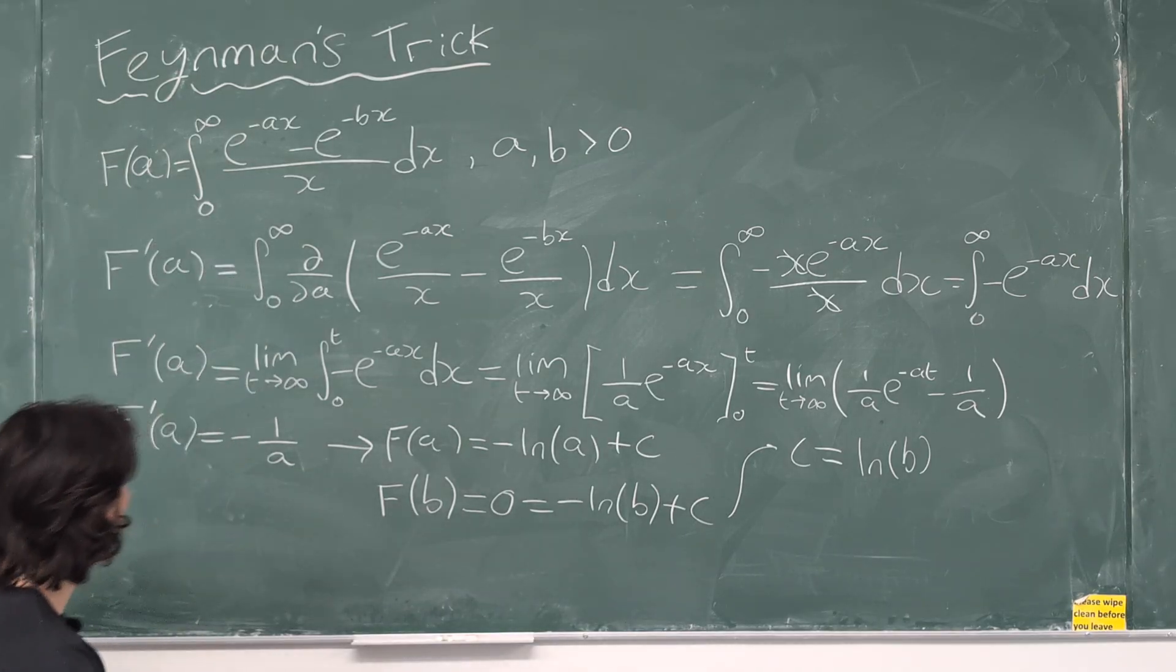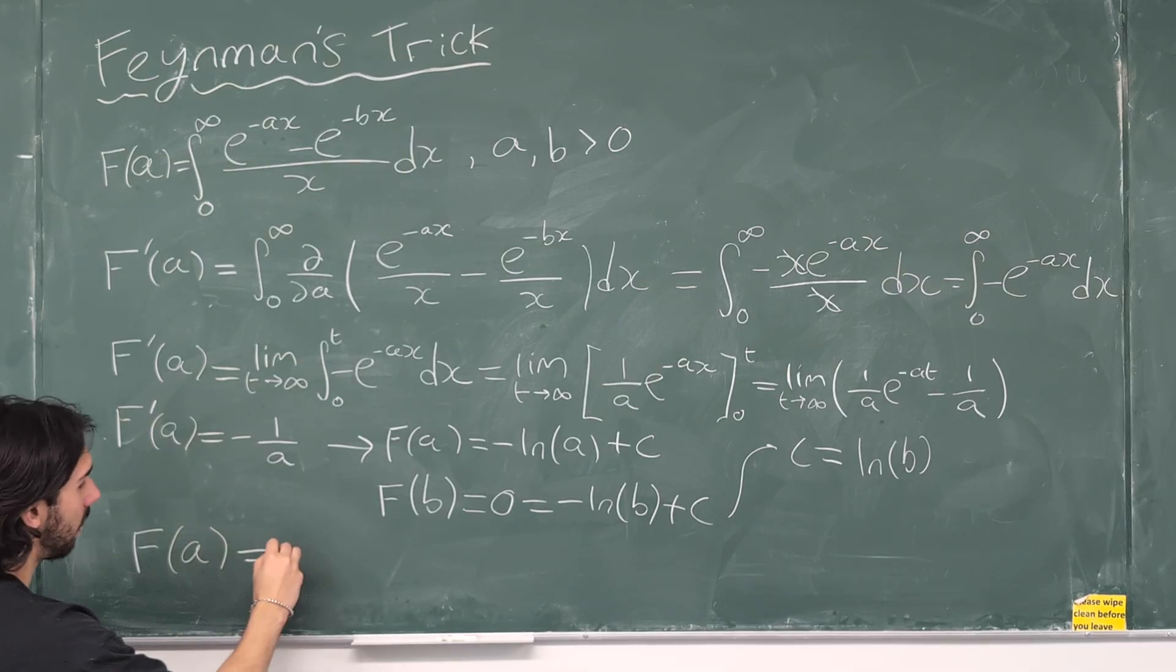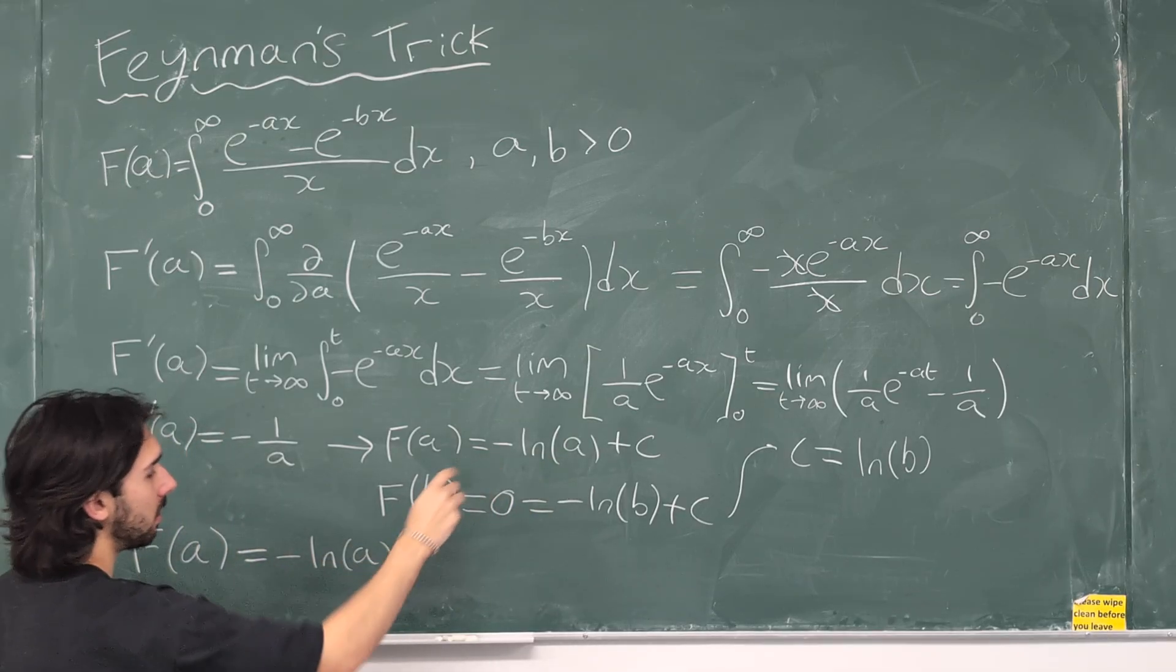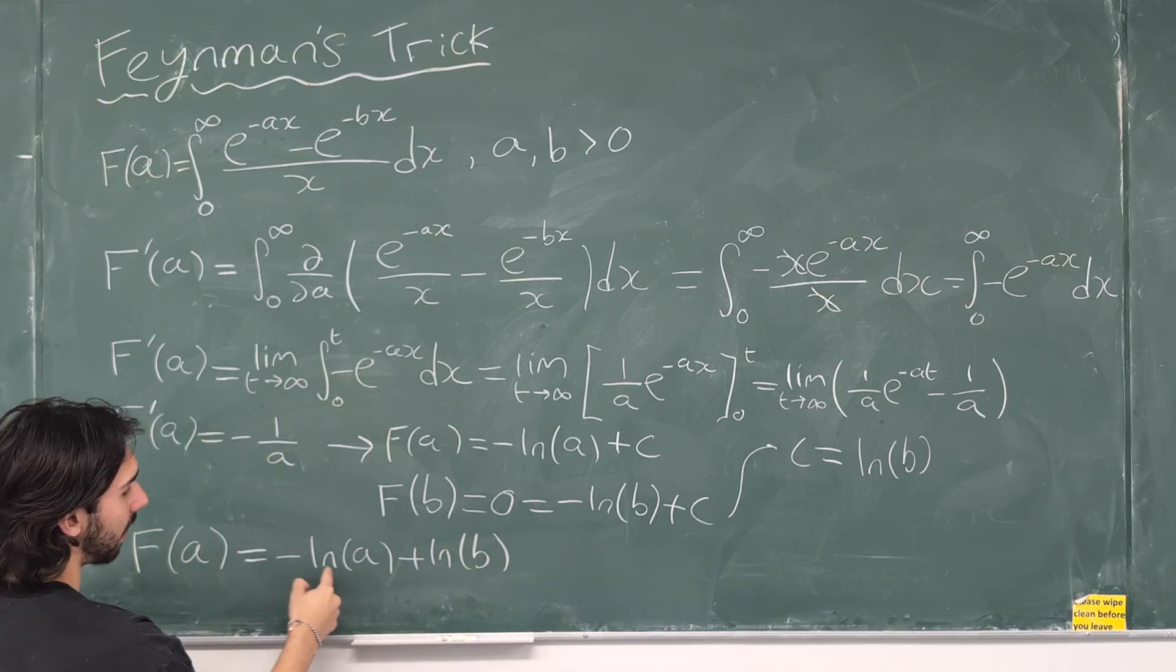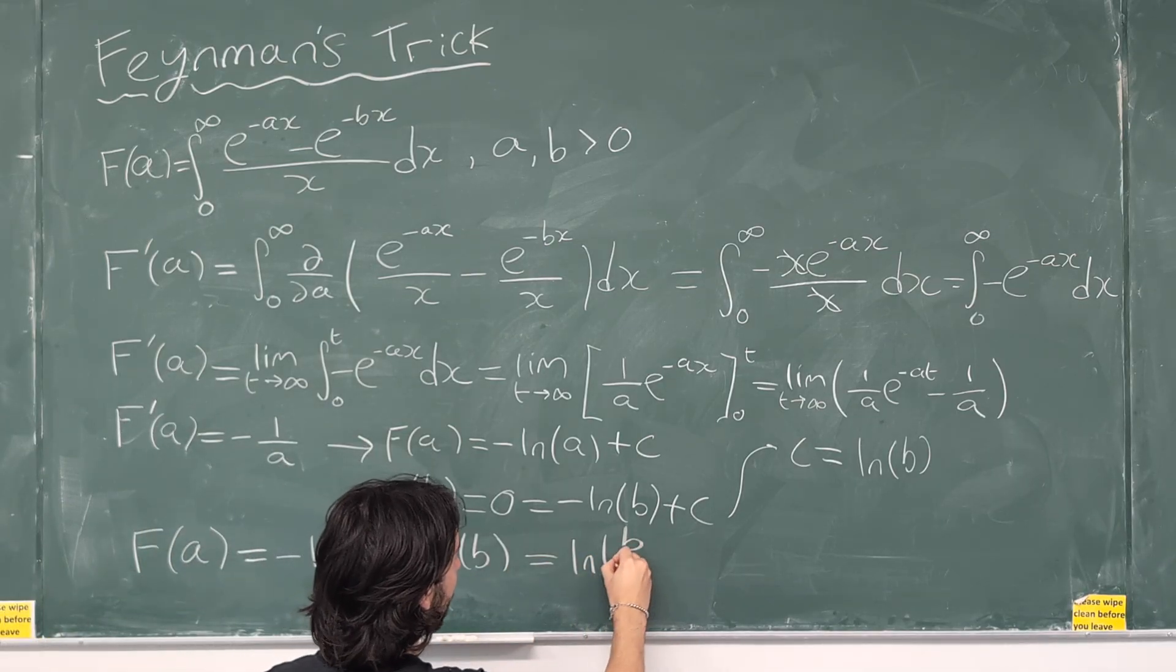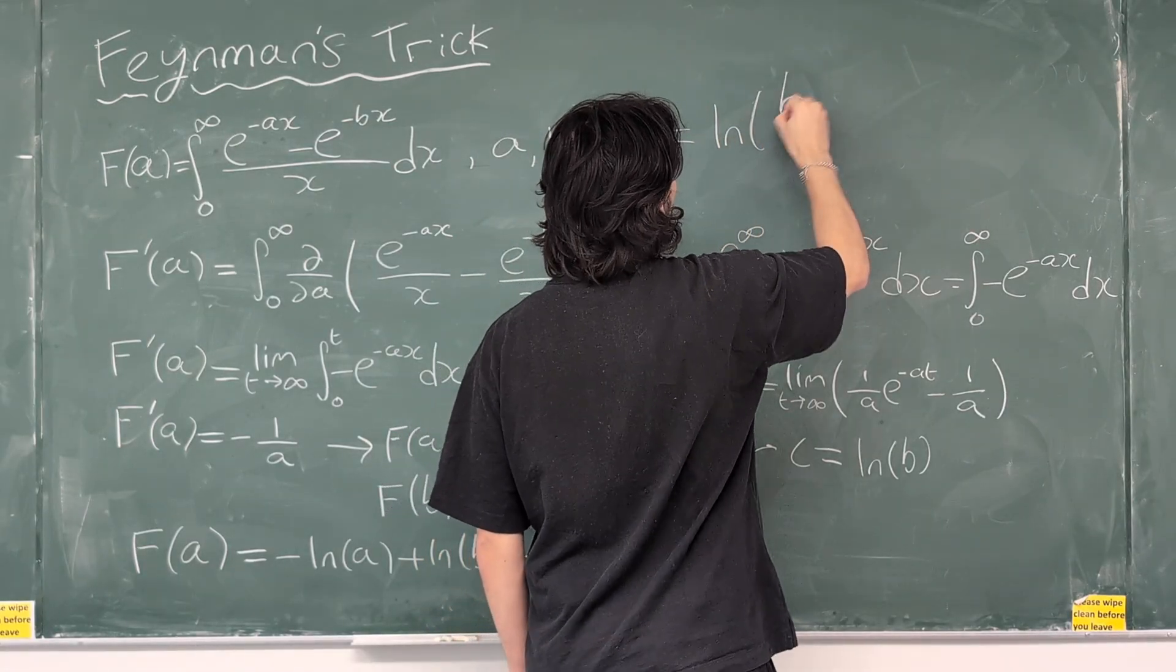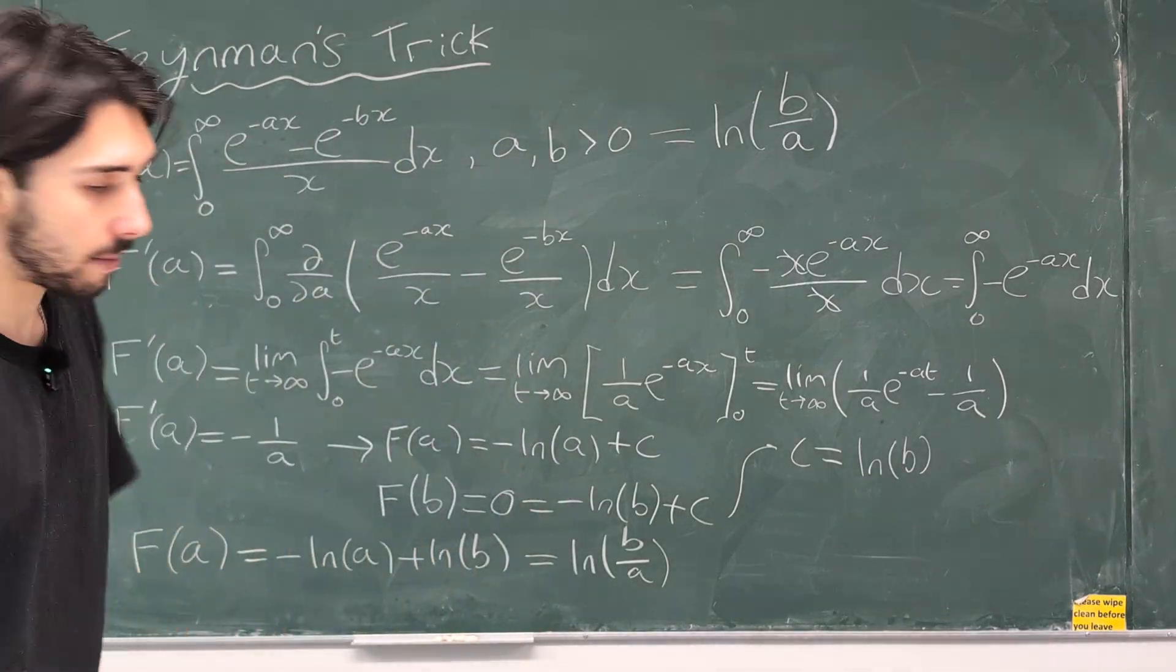So, that means that f of a is equal to minus the natural log of a plus c, which is the natural log of b. And that leads us to this really nice answer because minus the natural log of a plus the natural log of b, that's equal to the natural log of b over a. So, we worked out that this is equal to the natural log of b over a. And again, that's when a and b are both positive numbers.